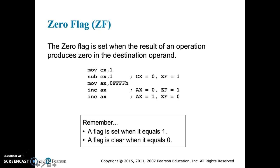So in this example, we're moving 1 to the CX register and we're subtracting 1. When we do that second operation, the subtract, you can see that the zero flag, ZF, is set to 1.